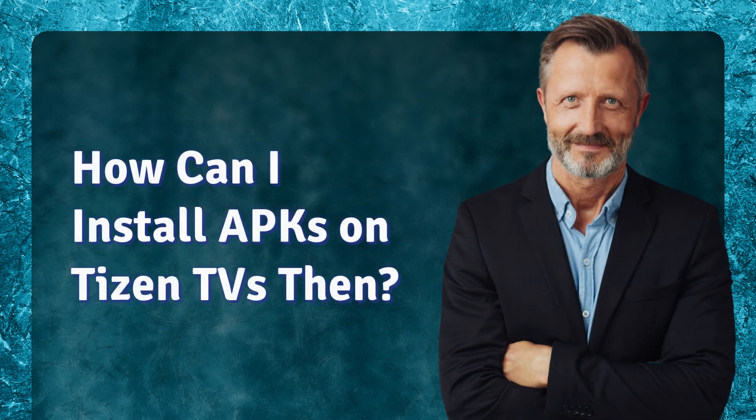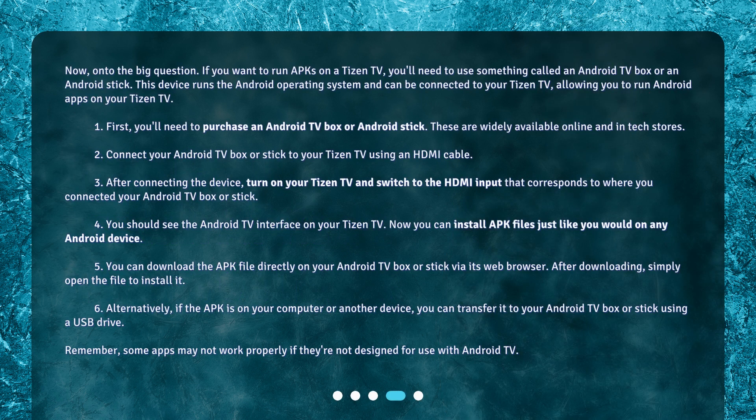How can I install APKs on Tizen TVs then? Now, on to the big question. If you want to run APKs on a Tizen TV, you'll need to use something called an Android TV box or an Android stick. This device runs the Android operating system and can be connected to your Tizen TV, allowing you to run Android apps on your Tizen TV.